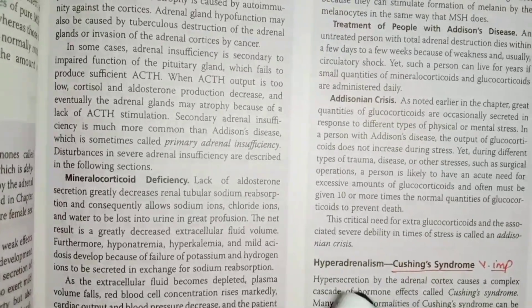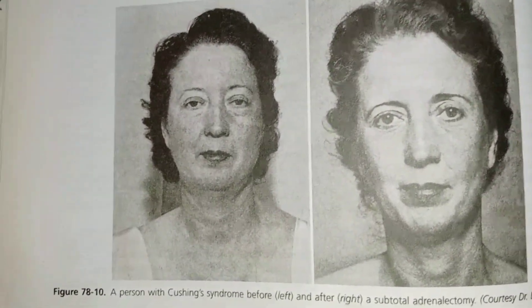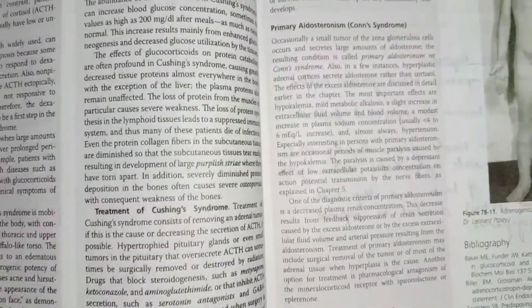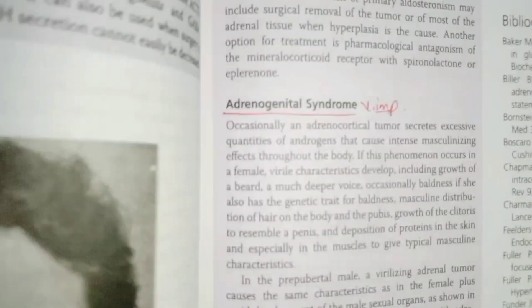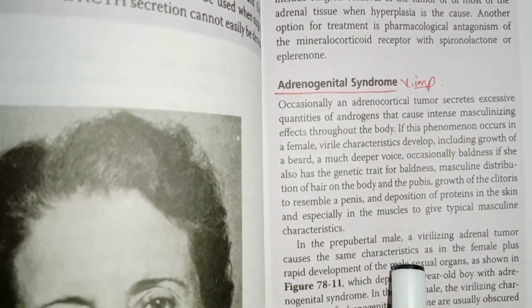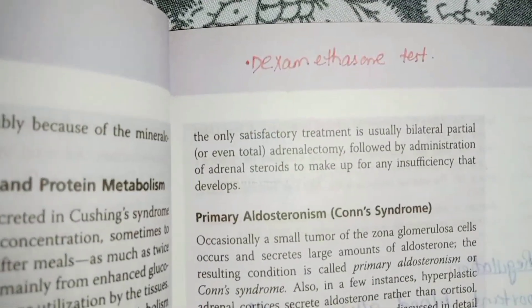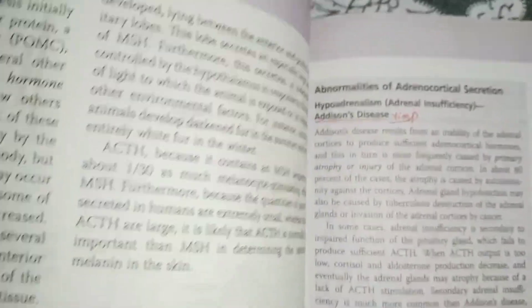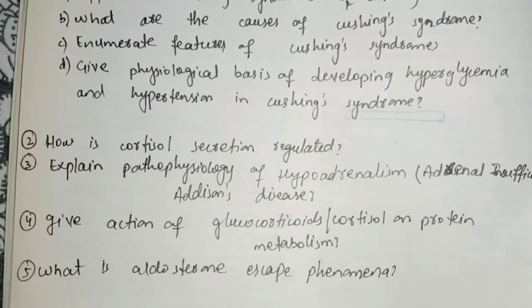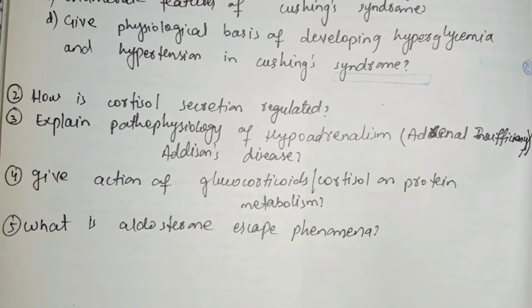Cushing's syndrome often comes with hyperaldosteronism. From two film pictures, we can learn the effects of carbohydrate and metabolism, treatment of Cushing's syndrome, and primary aldosterone syndrome. The dexamethasone test is important. These are 4 points of Cushing syndrome and Cushing disease, including how to regulate cortisol secretion and pathophysiology of hyperaldosteronism.